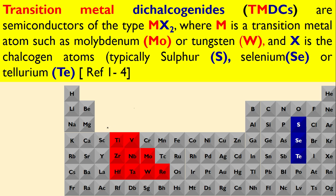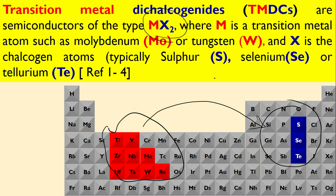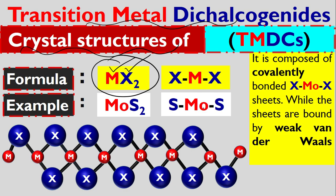If you look into the periodic table, these are transition metals, and these three atoms are chalcogen atoms: sulfur, selenium, and tellurium. When we combine these transition metals with chalcogen atoms with formula MX₂, we make transition metal dichalcogenides.